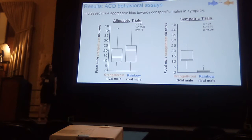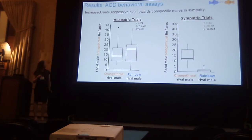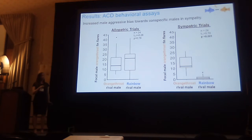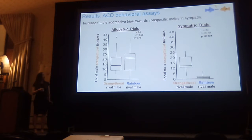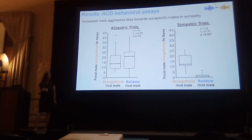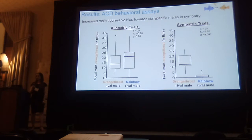We see a similar pattern when we look at the agonistic character displacement results. On the y-axis I have the focal male orange-throat darter's proportion of fin flares performed towards a conspecific or heterospecific rival male. Those don't differ significantly in allopatry, but in sympatry where these fish co-occur, there is increased male bias for aggressive behaviors towards conspecifics.